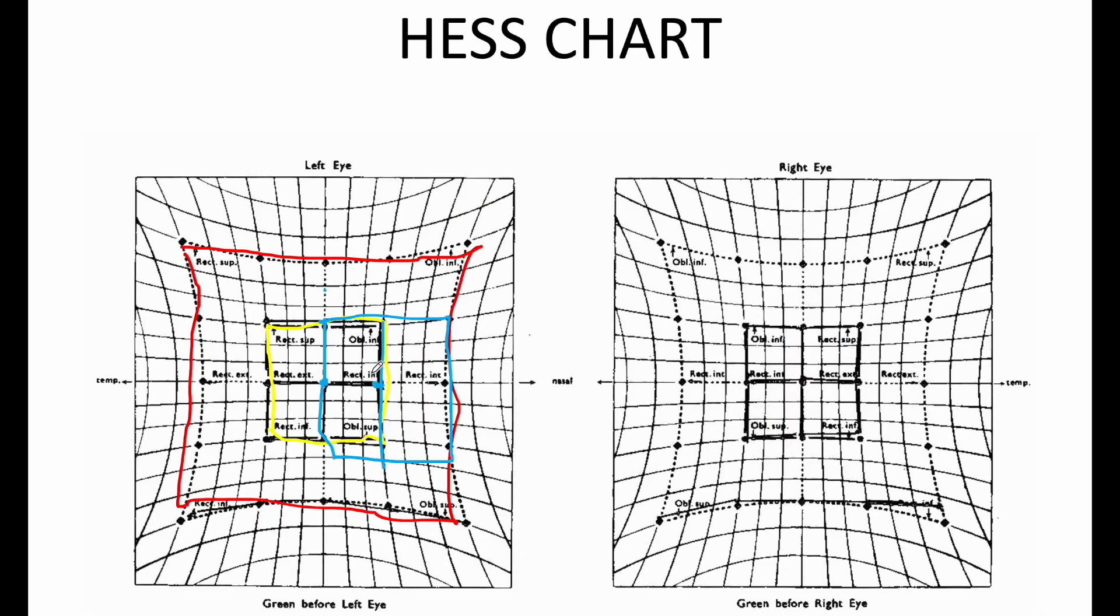If you want to measure what the deviation is, one of these squares is equal to five degrees. So one, two, three - that means there is 15 degrees of inward deviation of the eye. The direction of the displacement gives us the type of deviation. In this case, because it is shifted inwards or nasally, that means this patient has a left esotropia of 15 degrees.